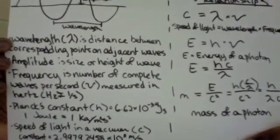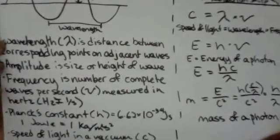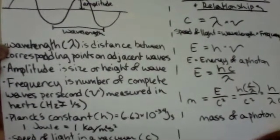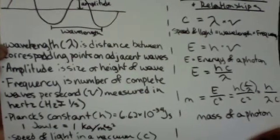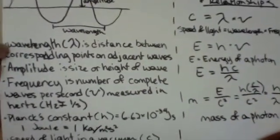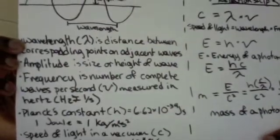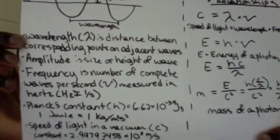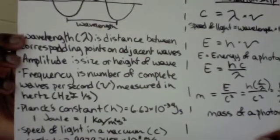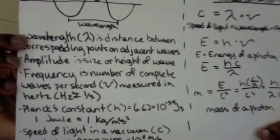Two constants that will come in handy and are useful to know are Planck's constant, which is H, and it is equal to 6.62 times 10 to the negative 34 joule seconds. And one joule is just a little note, is equal to one kilogram per meter squared second squared. And the speed of light in a vacuum, signified by C, is also a constant and it's equal to three times 10 to the eighth meters per second.